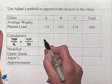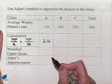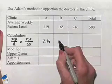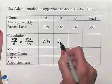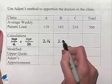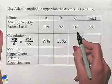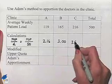That's going to give us, for the first clinic, 2.16. For the second clinic, we end up with an exact value, 3.00. For the third clinic, we end up with 3.93.